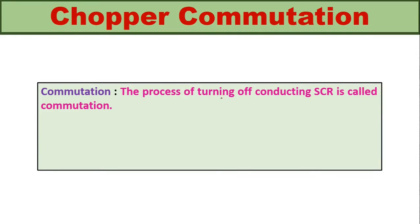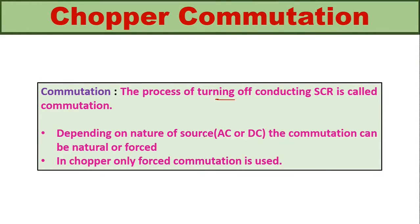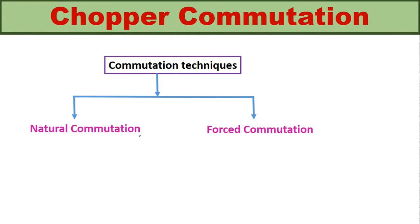Commutation is the process of turning off a conducting SCR. Depending on the nature of the source — whether it is AC or DC — commutation can be natural or forced. If the input source is AC, the commutation is called natural commutation. If the input source is DC, the commutation used is called force commutation. In DC choppers, since we always use a DC source, only force commutation is used.